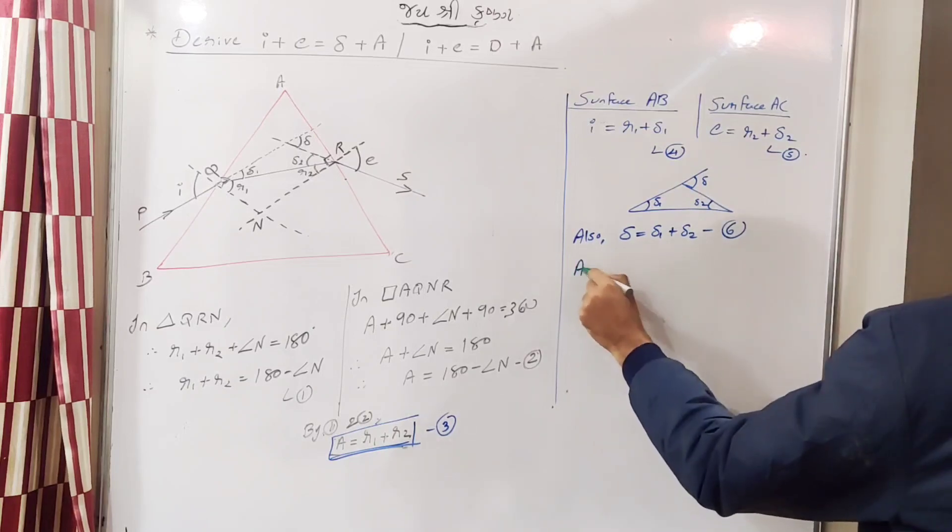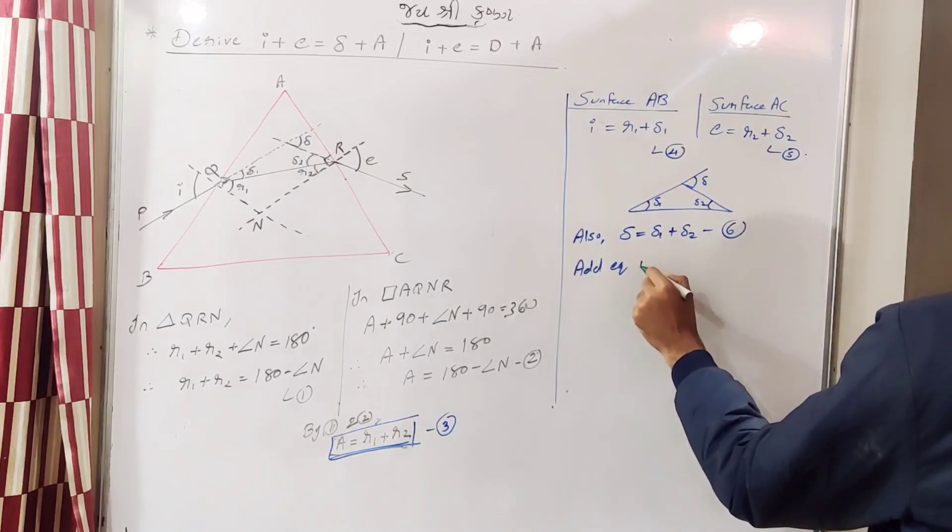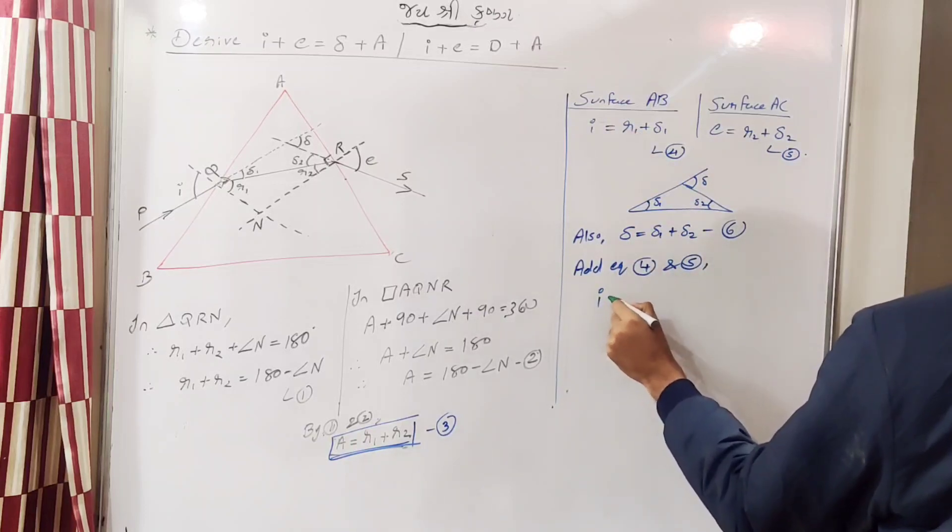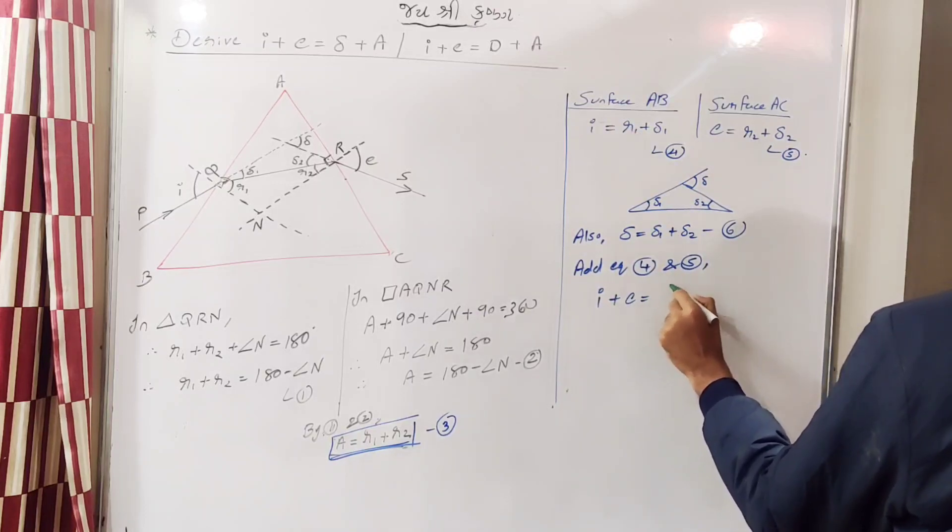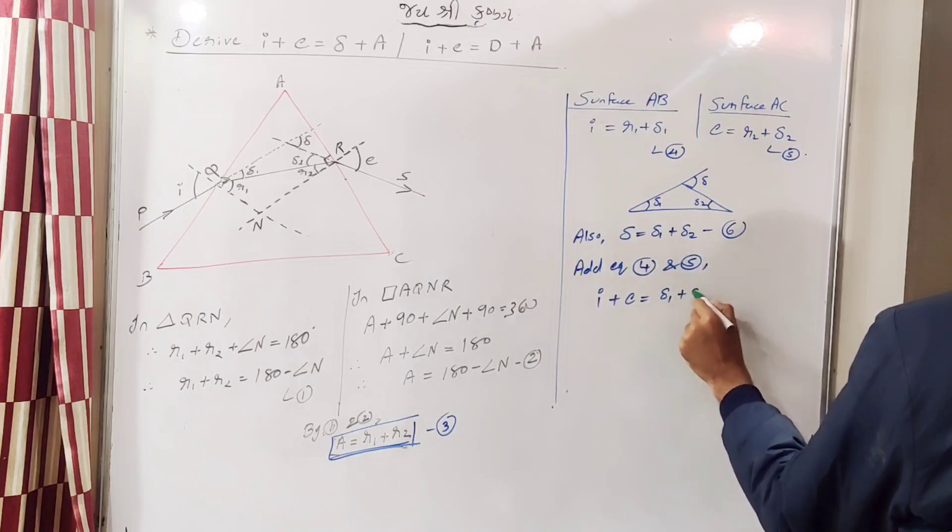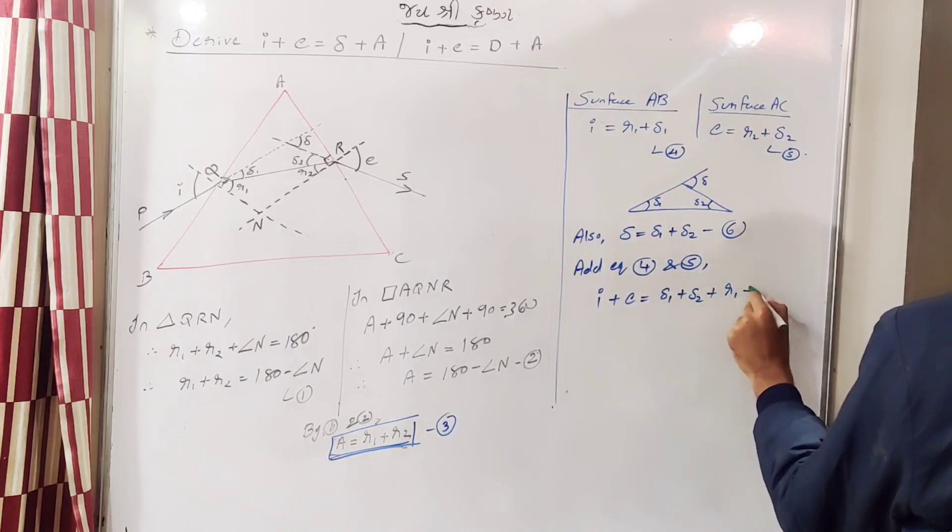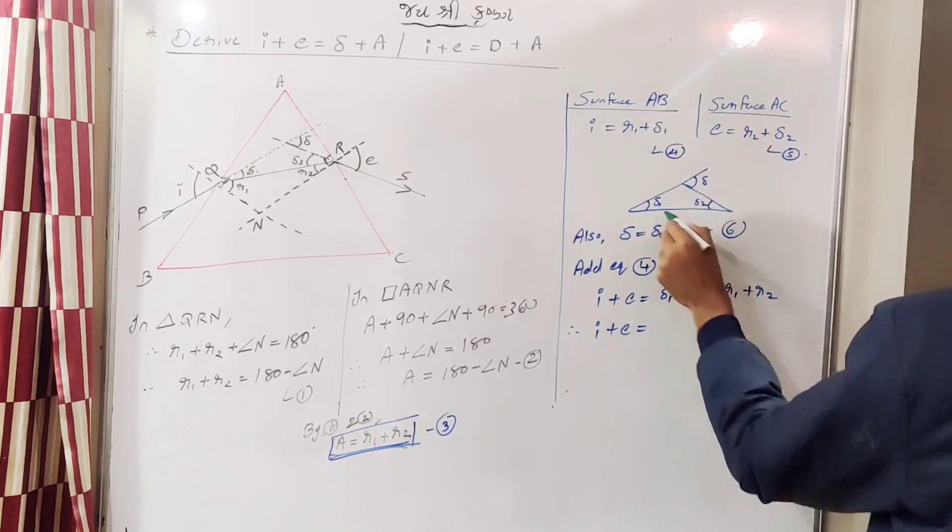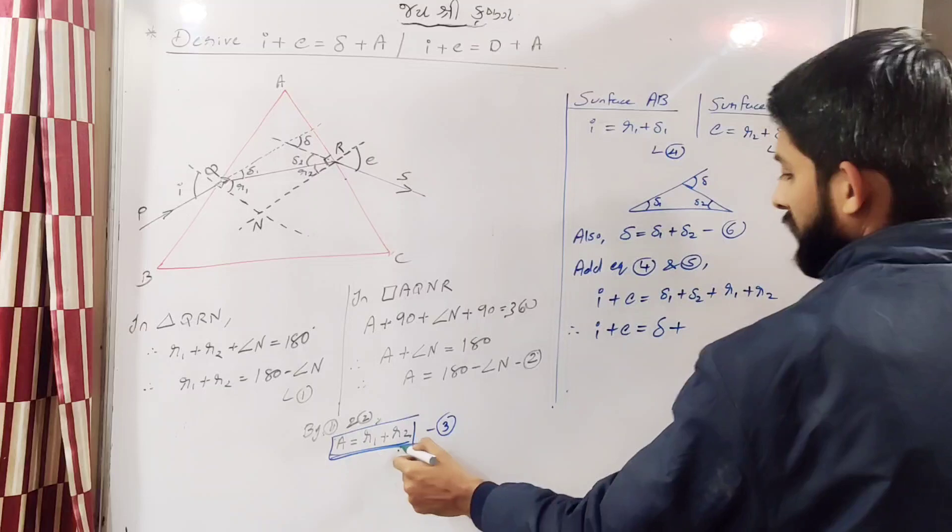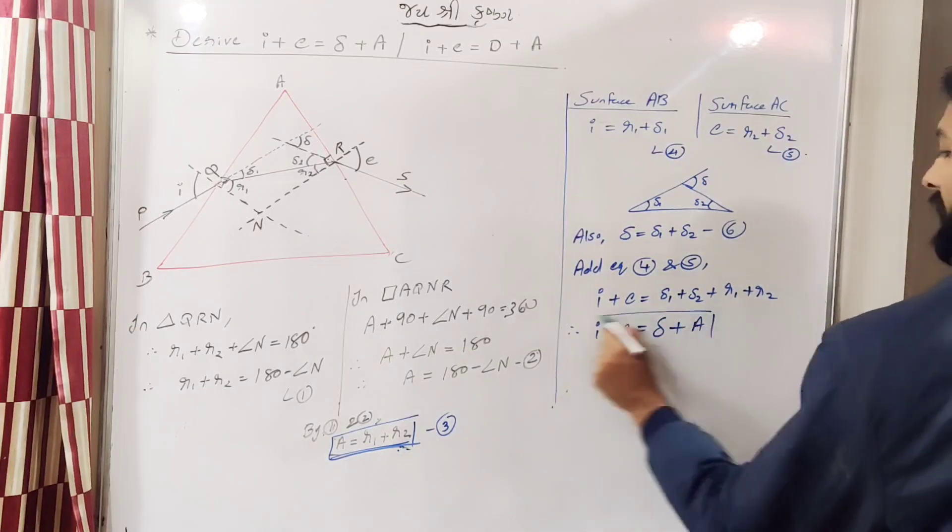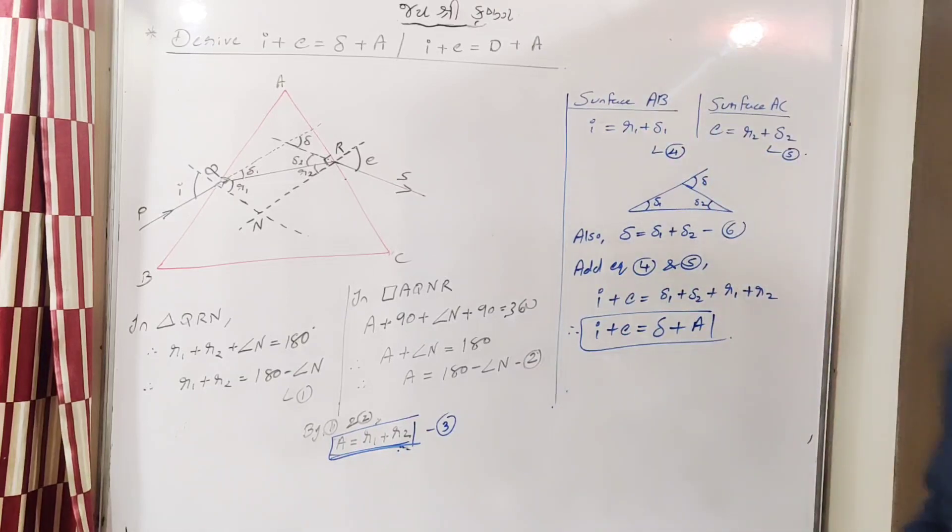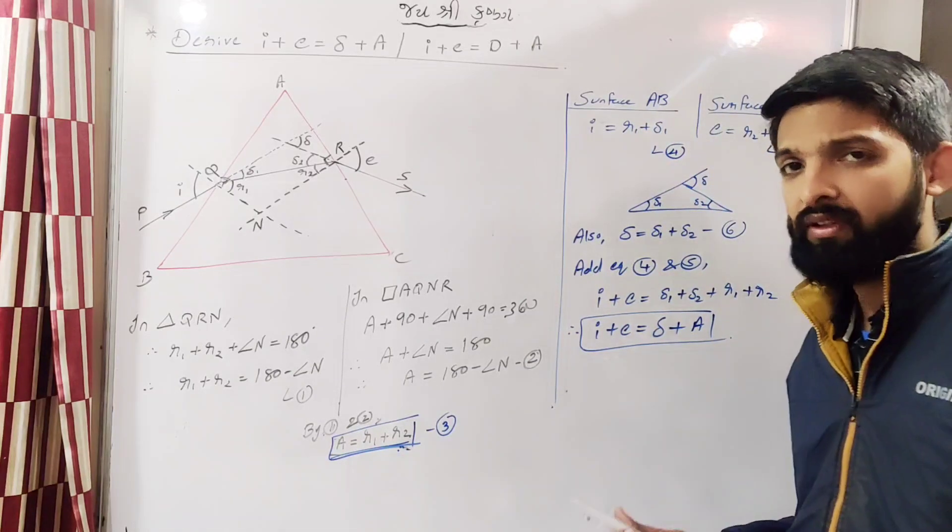Now add equation 4 and 5. So I plus E, that will be equal to delta 1 plus delta 2 plus R1 plus R2. So delta 1 plus delta 2 is total angle of deviation delta. R1 plus R2 is A. So you get I plus E equal to delta plus A. Simple. So this is a very important derivation and it's quite easy if you understand geometry properly.